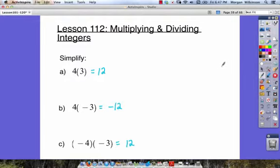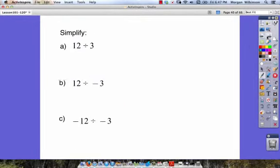Let's look at some division problems with integers. Here we've got 12 divided by 3. Well, we know that answer. 12 divided by 3, that's going to give us 4.